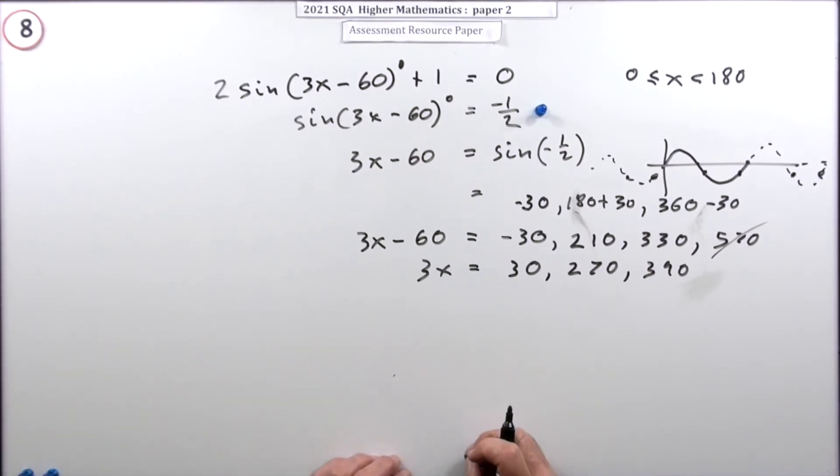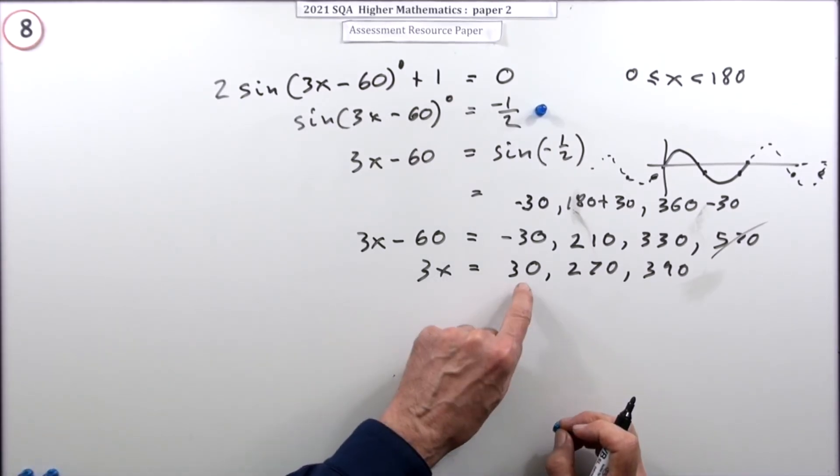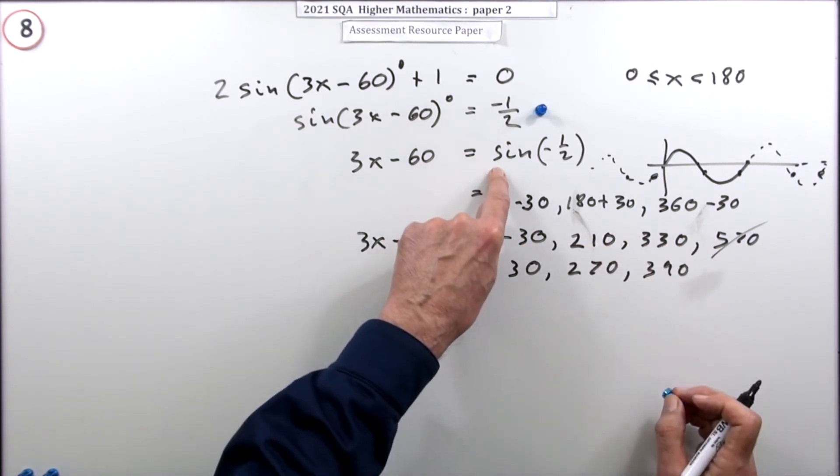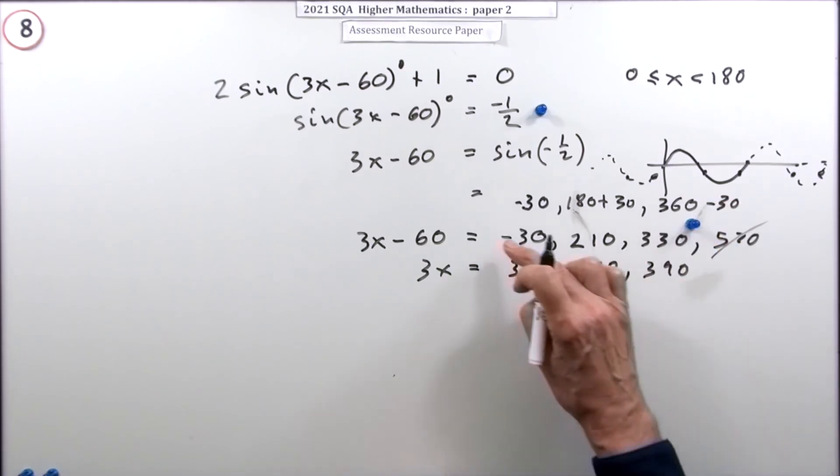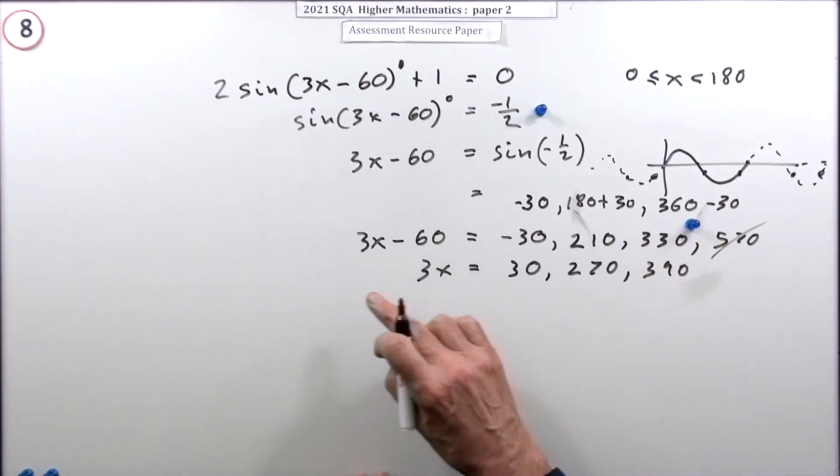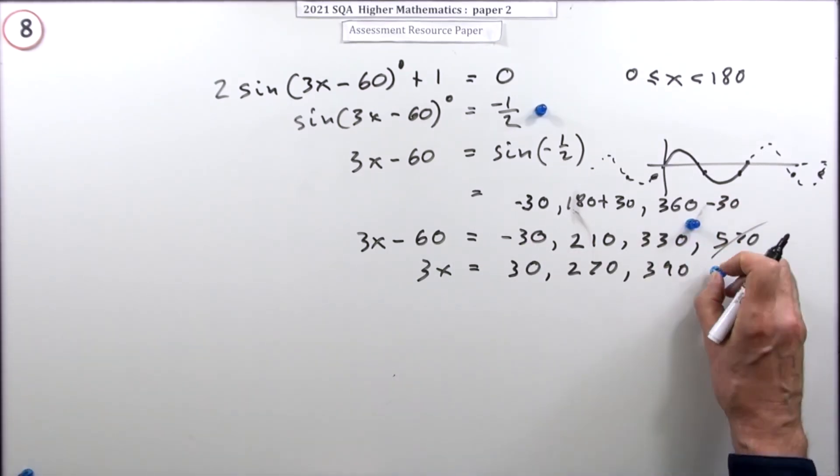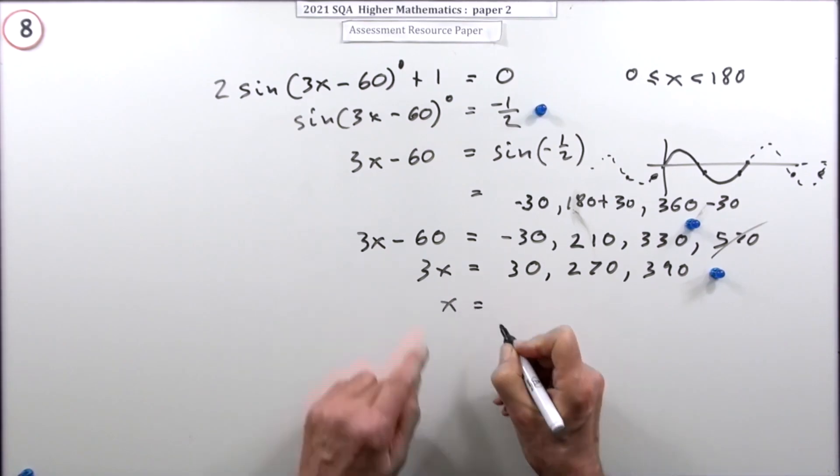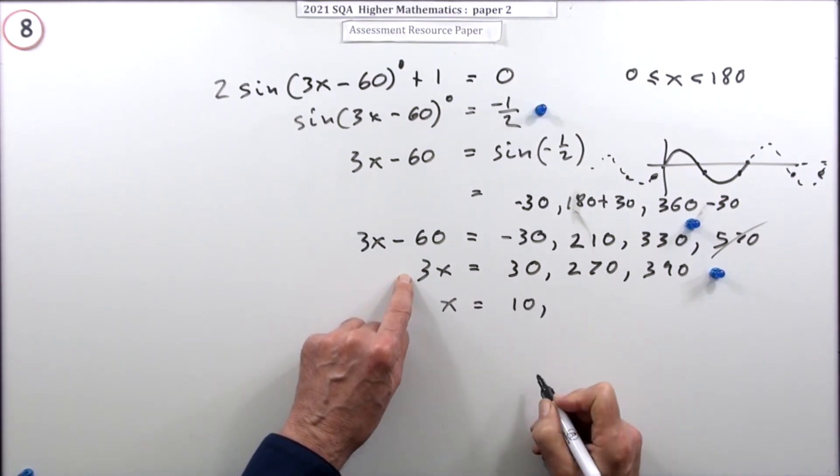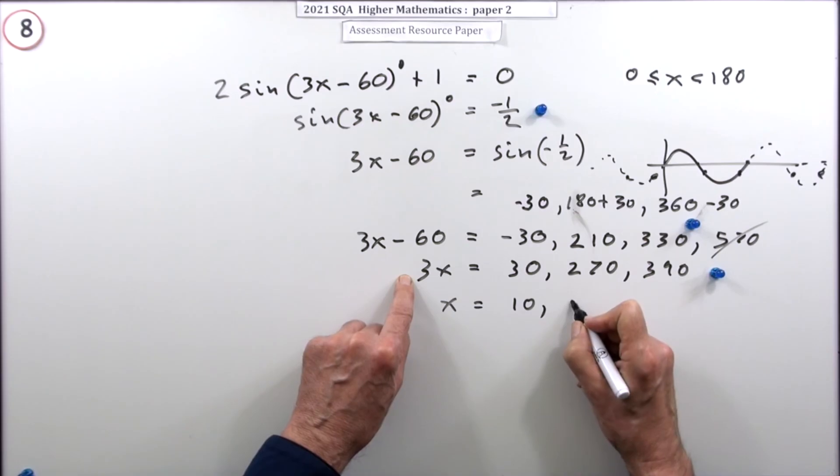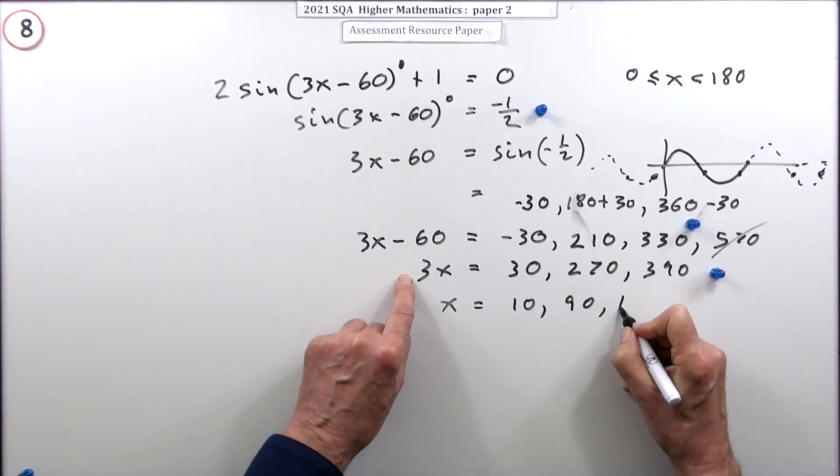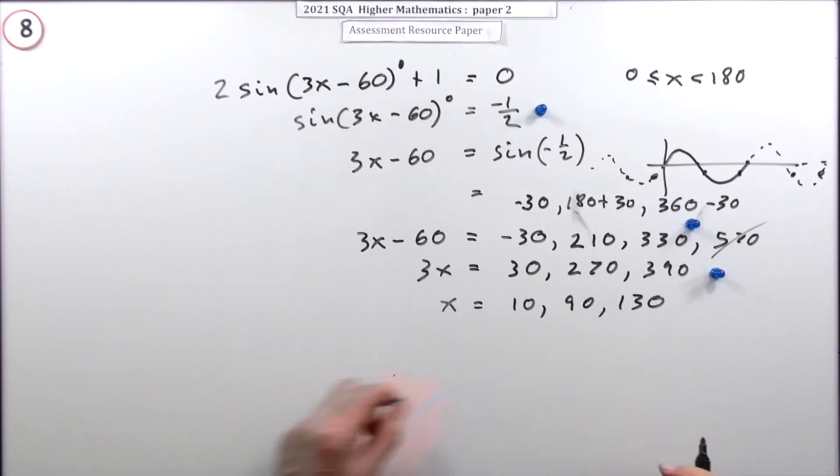The answers - they've snuck this wee one in. The first part would be right. Inverse sine should give you this set, then adding on the 60 should give you that set, and then finally dividing by three would give you your three answers: divide that by 3 gets 10, divide that by 3 gets 90, divide that by 3 gets 130.